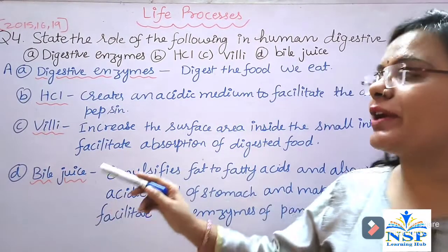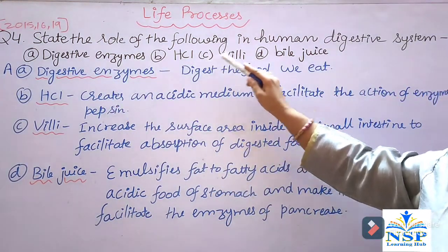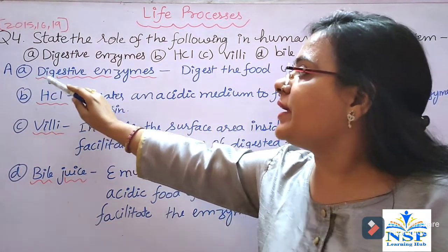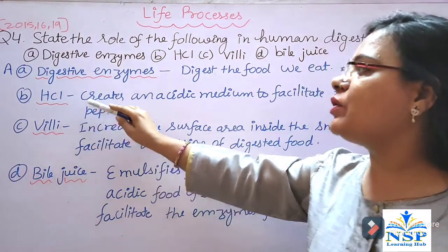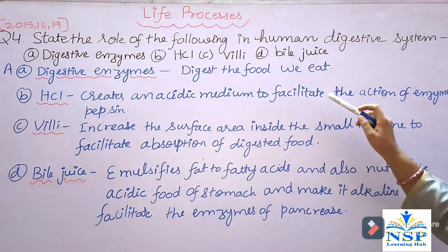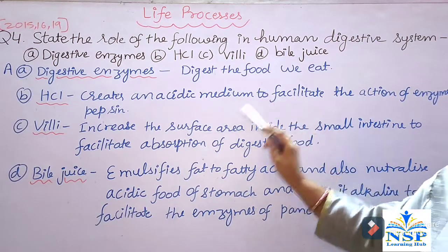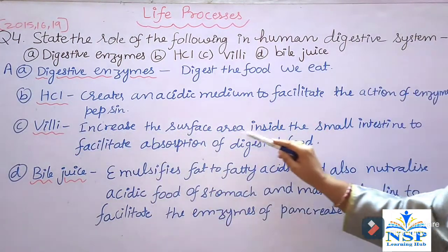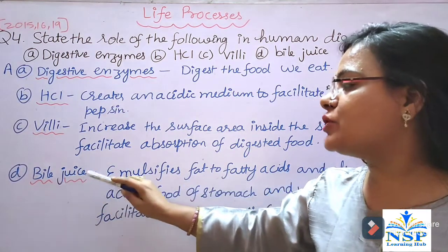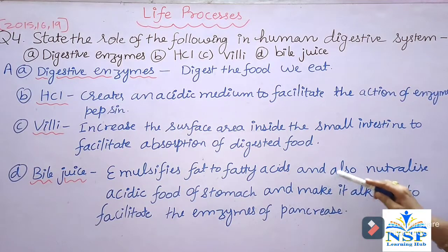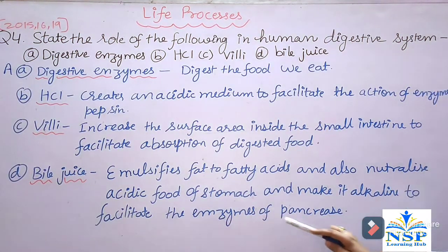Question number 4 is a very important question: State the role of the following in the human digestive system — A. Digestive enzymes, B. HCL, C. Villi, D. Bile juice. A. Digestive enzymes digest the food we eat. B. Hydrochloric acid creates an acidic medium to facilitate the action of enzyme pepsin, which works only in an acidic medium. C. Villi increase the surface area inside the small intestine to facilitate absorption of digested food. D. Bile juice emulsifies fat into fatty acids and also neutralizes the acidic food from the stomach to make it alkaline, facilitating the enzymes of the pancreas.